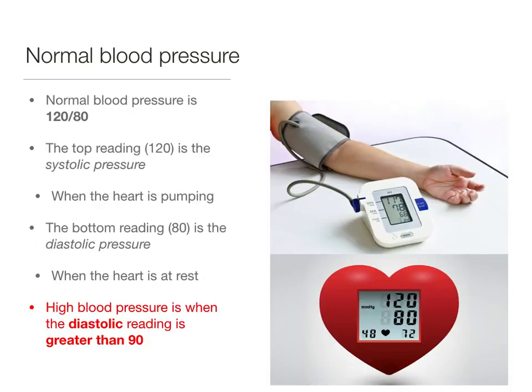Normal blood pressure, as shown in the images, is defined as 120 over 80. The top reading of 120 is the systolic pressure, or when the heart is pumping blood. The bottom reading of 80 is the diastolic pressure, when the heart is at rest.